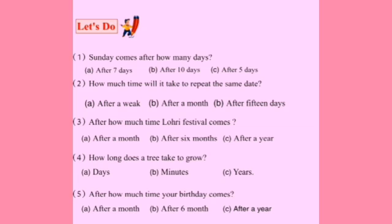Now we will solve these sums. Number one: Sunday comes after how many days? A. After 7 days. B. After 10 days. C. After 5 days. Dear students, there are 7 days in a week and a day comes after 7 days. We will tick on option A — after 7 days.